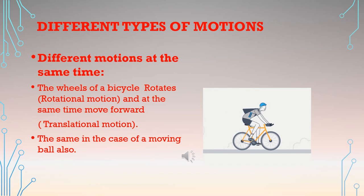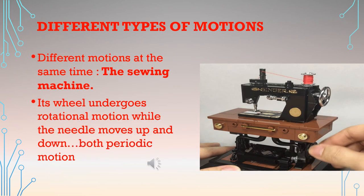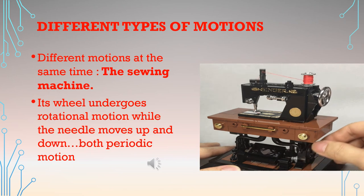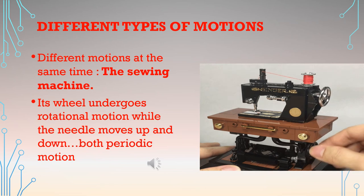These different types of motion can occur at the same time on the same object. For example, a bicycle wheel rotates while it also moves forward, so both rotational and translational motion take place simultaneously. Similarly, a moving ball rotates while moving forward. In a sewing machine, when the wheel rotates the needle makes an up-and-down periodic motion — so here a combination of two types of motion is present.